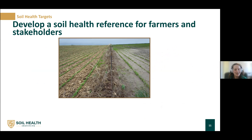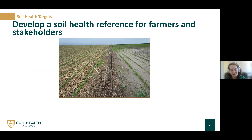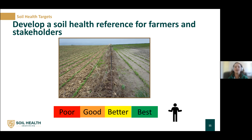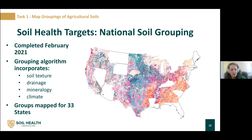Now that we have an idea of what to measure, the next big question is: what do we compare it to? We can compare two fields on different fence lines, but we don't know exactly how good one soil is or how good it can be. We've had a lot of back-and-forth with stakeholders and the scientific team, and we've centered on developing a soil health reference state system, so farmers and stakeholders can know where they are on their journey compared to farmers with similar climates and similar soil properties.